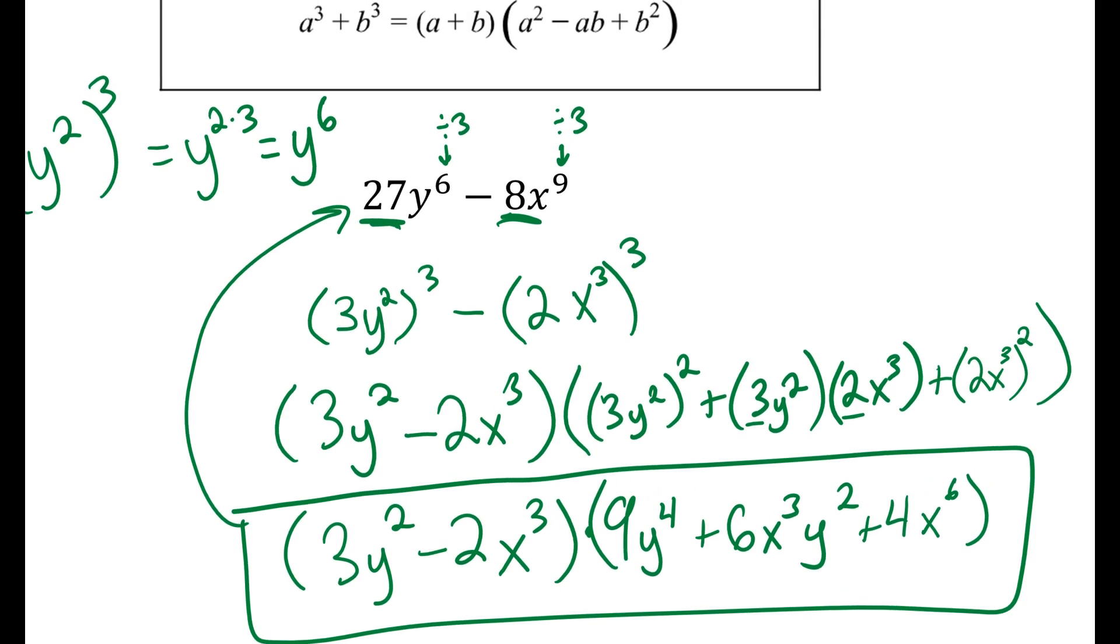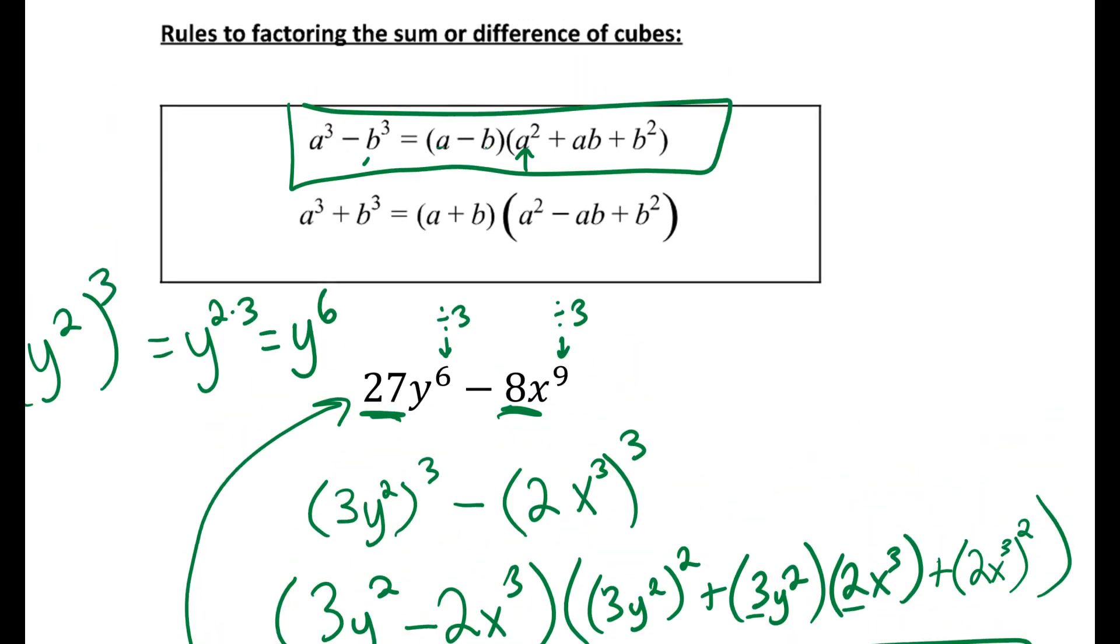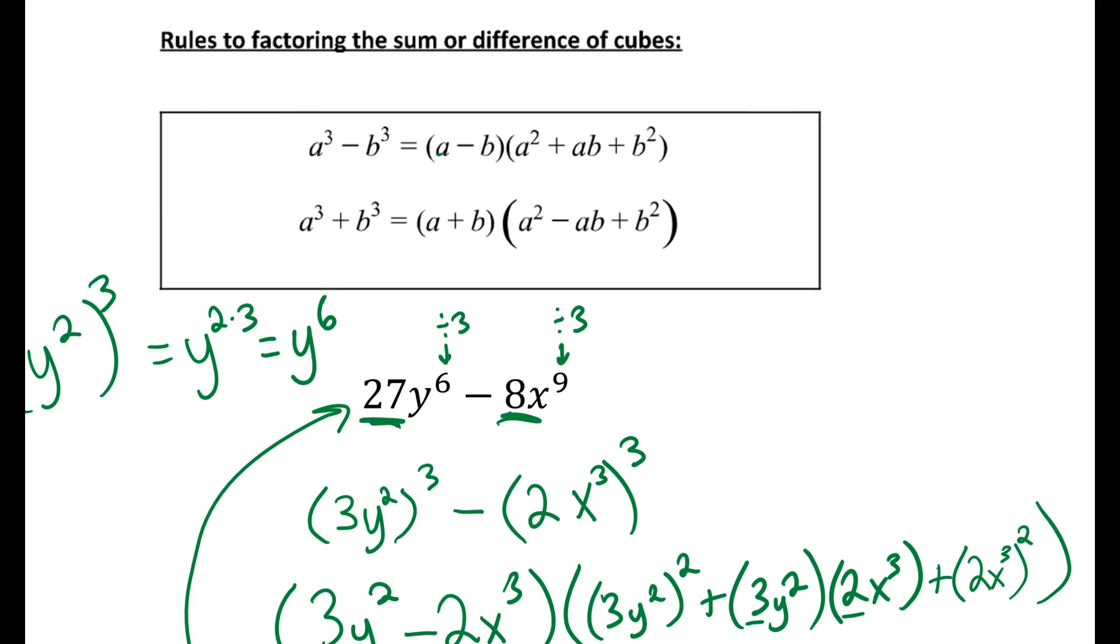So for all of these problems, you're going to need to memorize these two formulas up here. One acronym that I think sometimes helps to remember the order of the signs is that the first sign is always the same as what you started with. The second sign is always opposite. And the last sign for both the difference and the sums of cubes is always positive. So I think to myself, SOAP, same opposite, always positive, to figure out what order the signs go in for these formulas.